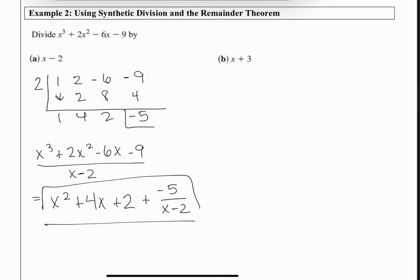That was way easier than long division and super quick. I was only able to do that because I had a linear divisor — x to the 1st power. And as a reminder, if I plug 2 into this polynomial, I would get out −5.